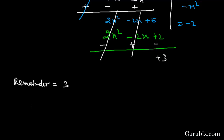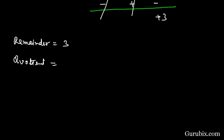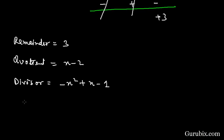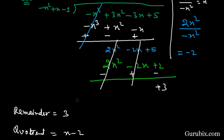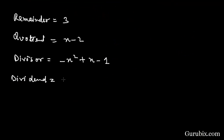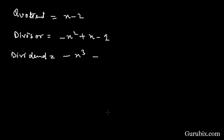Therefore, the remainder is equals to 3, the quotient is x minus 2, the divisor is minus x squared plus x minus 1, and the dividend is minus x cubed plus 3x squared minus 3x plus 5.